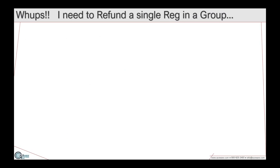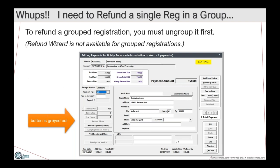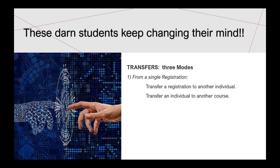What if someone wants out of a group? If a member of a company group can't come to the workshop and needs a refund, you must ungroup the registration before you can process a refund — you cannot use the refund wizard for grouped registrations. Once ungrouped, you can go into the individual registration and use the standard refund wizard approach.